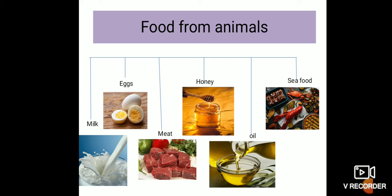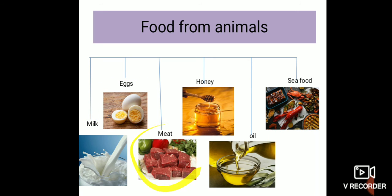So seed is also a part of the plant that we eat as food. In the first part, I told you that there are two major sources of food ingredients — plants and animals. Now, food from animals: the major six types of food we get from animals are milk, egg, meat, honey, oil, and seafood.